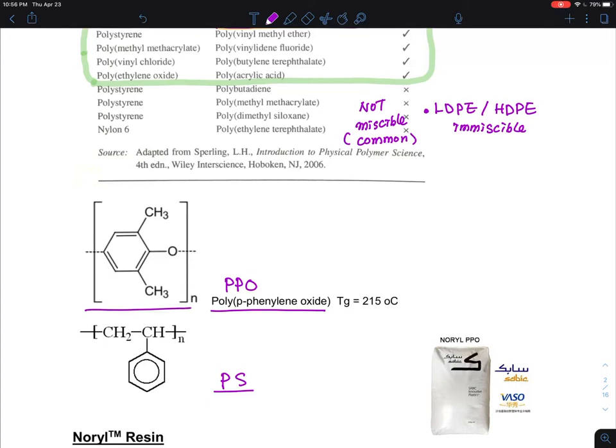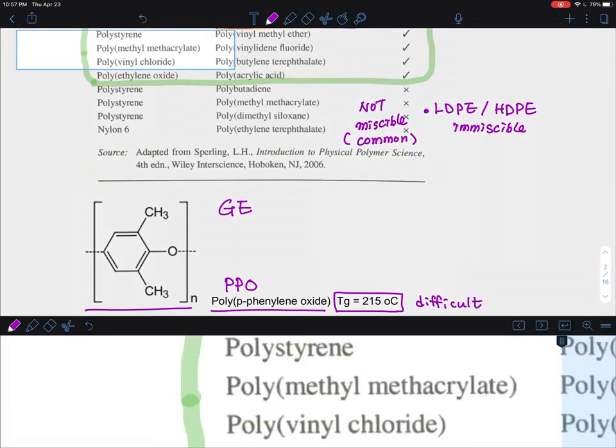PPO was made by people at General Electric, GE Plastics. General Electric scientists were trying to make this polymer as an engineering plastic. This one has a glass transition temperature of 215 degrees C, while polystyrene has a glass transition temperature of 100 degrees C. So it has a very high Tg, it's a very stiff polymer. But at the same time, this means that this polymer is very difficult to process.